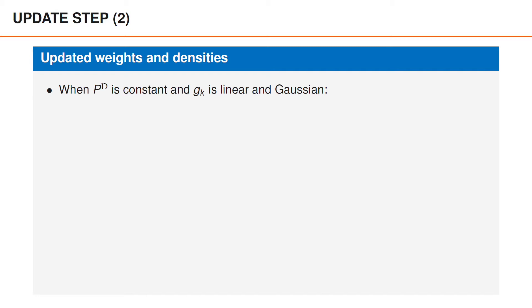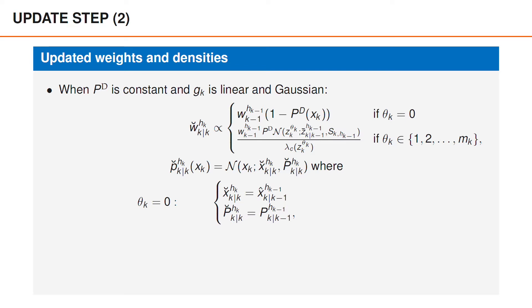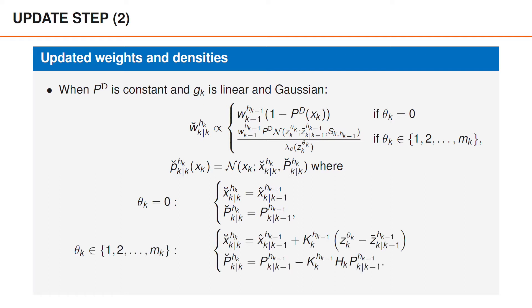The specific assumptions needed for the equations to simplify are that p d is constant and that the object likelihood g k is linear and Gaussian. The expression for the weight of h k then takes the following form: if theta k is zero, it is the weight of h k-1 times 1-p d; and if theta k is greater than zero, it is the weight of h k-1 times p d times the predicted likelihood divided by the clutter intensity. Under these assumptions, the posterior density given h k is a Gaussian density. If theta k is equal to zero, this Gaussian density has the same mean and covariance as the predicted density under hypothesis h k-1. If theta k is greater than zero, its mean and covariance are obtained using a standard Kalman filter update, assuming the predicted density has the moments defined by h k-1 and that z theta k is the object measurement. All of these equations are analogous to the conceptual solution, where we also obtained m k-1 new hypotheses for every predicted hypothesis.